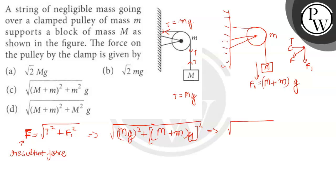Now, here we can again write it as capital M square plus capital M plus small m whole square. Taking g square common and by taking it out of root, it's g. So student, this is the resultant force or the force by clamp.